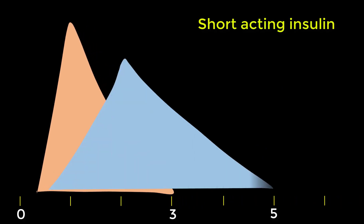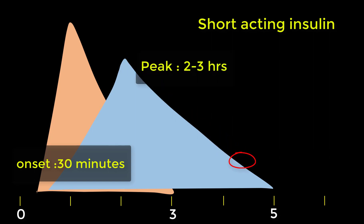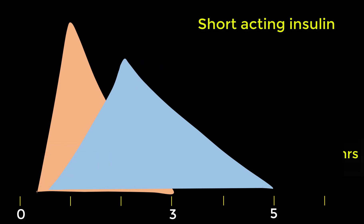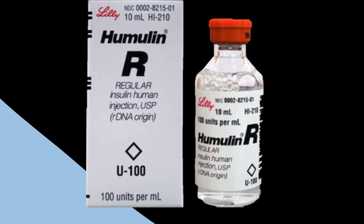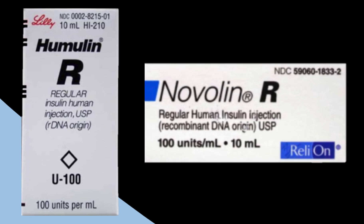Short-acting insulin starts to work within 30 minutes after injection, reaches its maximum effect two hours later, and continues to work for about five hours. Short-acting insulin is known as regular insulin. Trade names are Humulin R and Novolin R. As you can see, regular insulin ends with the letter R.